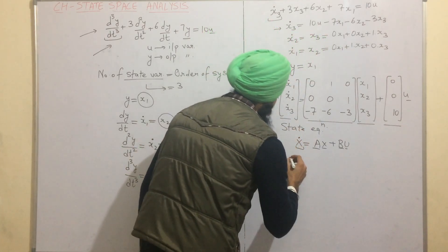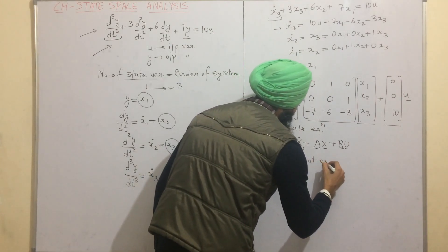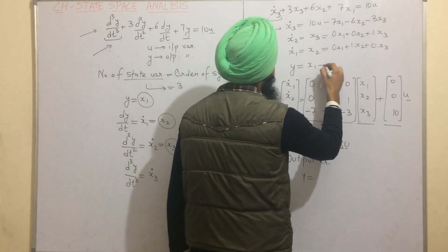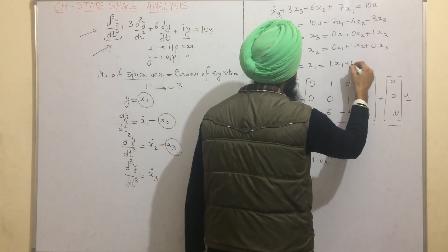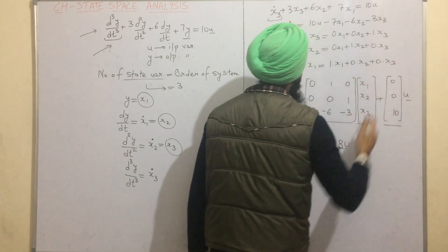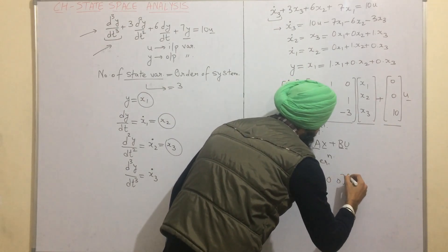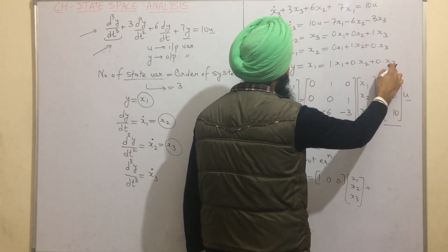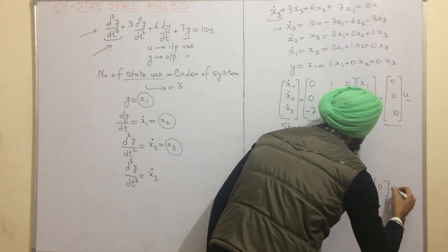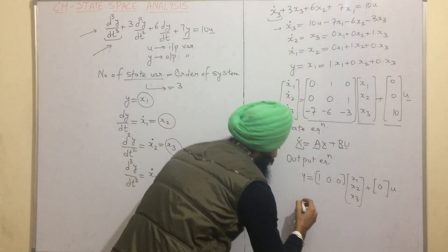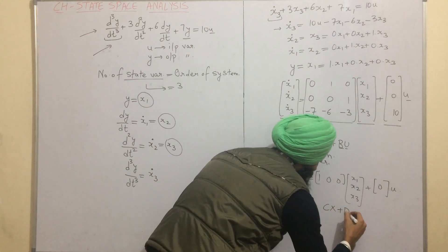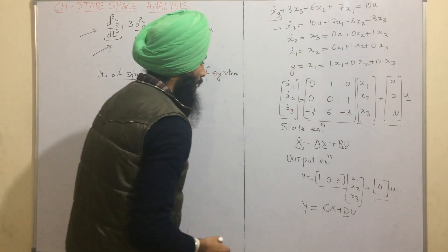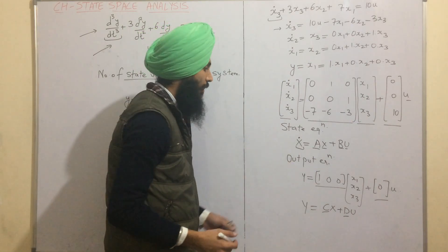Now we write the output equation in matrix form. Since y = x1, it can be written as 1·x1 + 0·x2 + 0·x3, giving the matrix [1, 0, 0] multiplied by [x1, x2, x3]ᵀ. Since no direct input term is applied to the output, we add 0·u. This output equation is of the form y = Cx + Du, where C = [1, 0, 0] and D = [0].